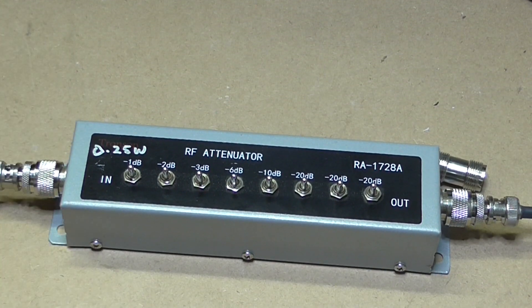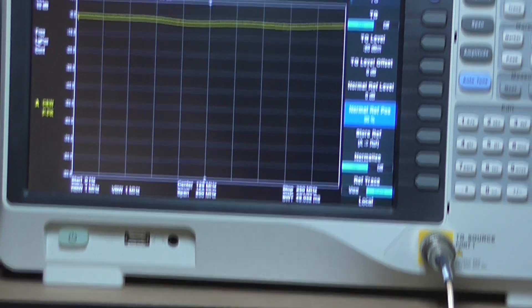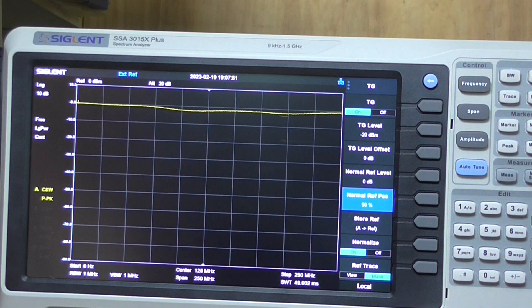We can see that we don't really have a straight line anymore on the spectrum analyzer—there's a slight curve to it. It won't be the cables; it could be the connectors or the attenuator itself.